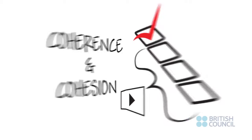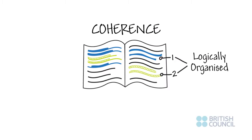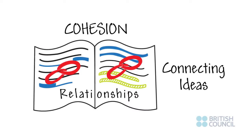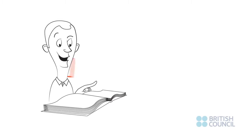Coherence refers to the flow of your writing. Your ideas should be logically organized and appropriately sequenced into paragraphs so they are easy to understand and follow. Cohesion refers to linking words that help you connect ideas and show the relationship between paragraphs, sentences, or parts of sentences. So, this criteria looks at how a writing test answer is organized and how to link information and ideas.